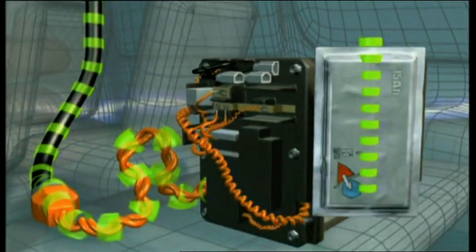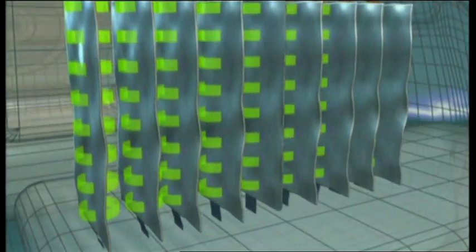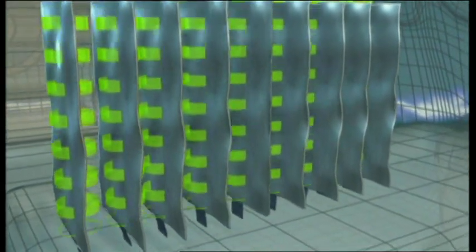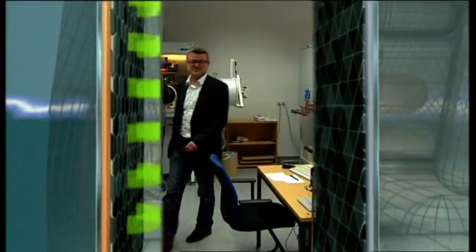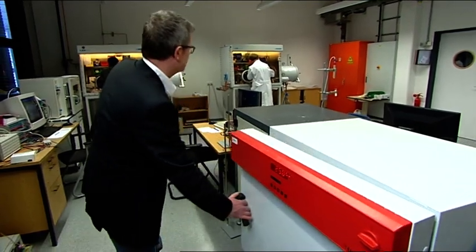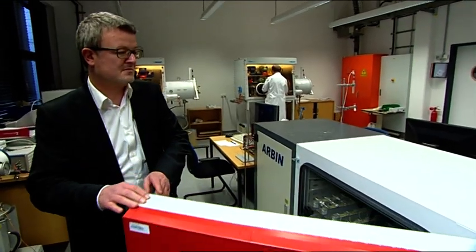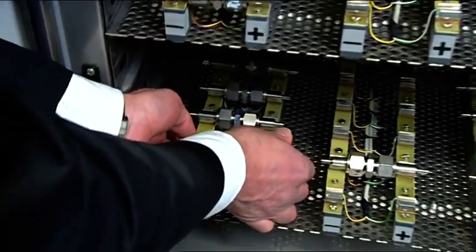How long the charge lasts depends on the electrochemical makeup. The limits of conventional lithium technology have already been reached. Now researchers are looking for new materials. Fichtner is focusing on metal and metal fluoride compounds. He tests their long-term performance. The small experimental cells work just like the larger cells.